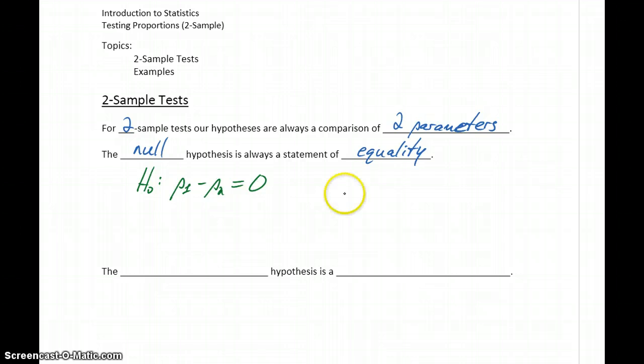So for testing a claim about two proportions, this will always be our null hypothesis. It's always going to be that the difference of those two parameters is exactly equal to zero. And the reason it's always said equal to zero is because we could rewrite this null hypothesis as p1 equals p2.